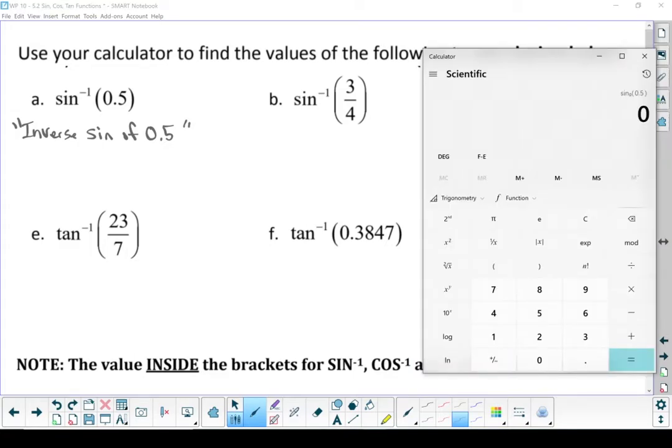Bring up our calculator. Type in 0.5. I'm going to go second function sine. See how my calculator pops up as sine negative 1? That's the inverse sine. When I took that 0.5 and I went backwards, I ended up with 30.